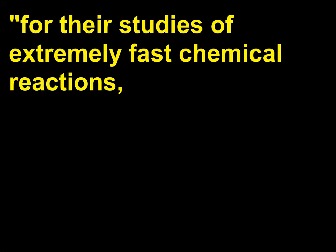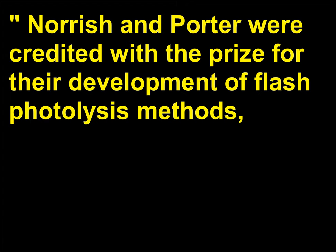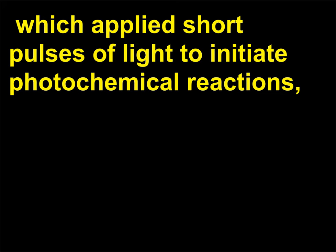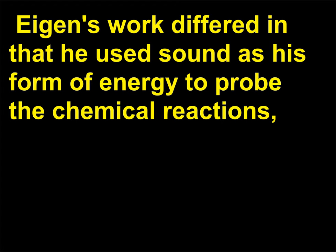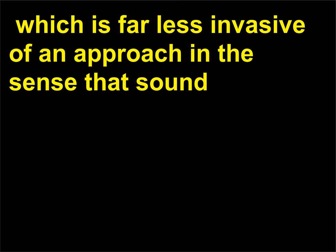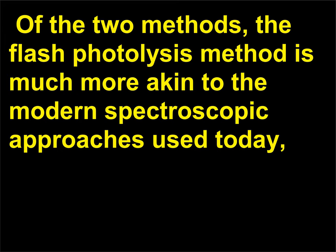For their studies of extremely fast chemical reactions, effected by disturbing the equilibrium by means of very short pulses of energy. Norrish and Porter were credited with the prize for their development of flash photolysis methods, which applied short pulses of light to initiate photochemical reactions, allowing them to study very fast chemical reactions that could not previously be observed. Eigen's work differed in that he used sound as his form of energy to probe the chemical reactions, which is far less invasive in the sense that sound does not cause drastic changes in the behavior of the molecules being studied. Of the two methods, the flash photolysis method is much more akin to the modern spectroscopic approaches used today.